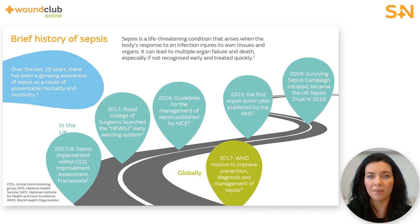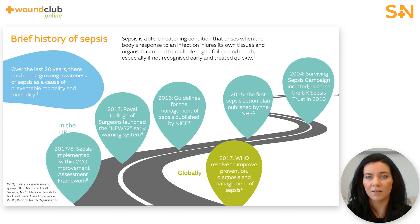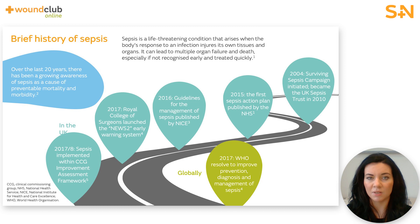Over the last 20 years in the UK there has been a growing awareness of sepsis as a cause of preventable mortality and morbidity. In 2004, the Surviving Sepsis Campaign was set up, becoming the UK Sepsis Trust in 2010. In 2015, the first sepsis action plan was published by the NHS, followed in 2016 by the first NICE guidelines describing the recognition, diagnosis and early management of sepsis. On a global level in 2017, the World Health Organisation adopted a resolution to improve the prevention, diagnosis and management of sepsis, giving fresh impetus to experts in the UK to continue to develop a national action plan.